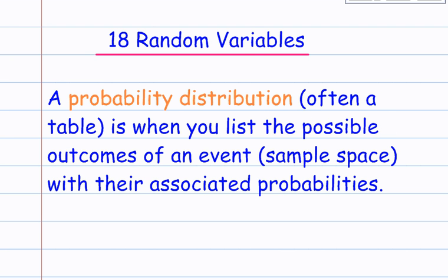A probability distribution, often in the form of a table, is when you list the possible outcomes of an event, which is a sample space, with their associated probabilities.